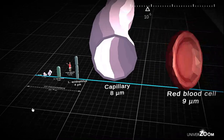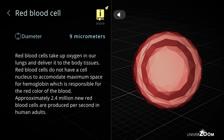Red blood cell, diameter: 9 micrometers. Red blood cells take up oxygen in our lungs and deliver it to the body tissues. Red blood cells do not have a cell nucleus to accommodate maximum space for hemoglobin, which is responsible for the red color of the blood. Approximately 2.4 million new red blood cells are produced per second in human adults.